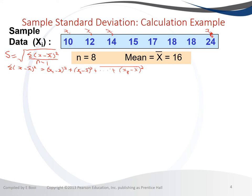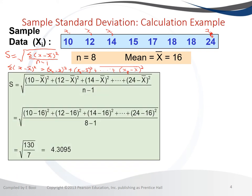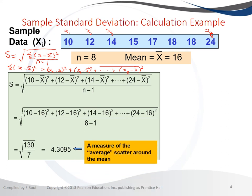Substituting the values: x1 is 10, x2 is 12, x3 is 14, and x8 is 24. We calculate (10 minus 16) squared plus (12 minus 16) squared, and so on, with n equals 8 minus 1 in the denominator. Once we solve the numerator we get 130 divided by 7, and taking the square root gives us 4.3095. This tells us how far apart the data are from the mean on average.